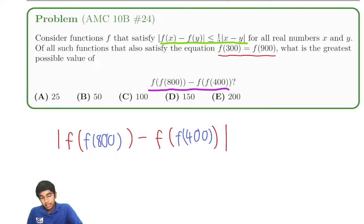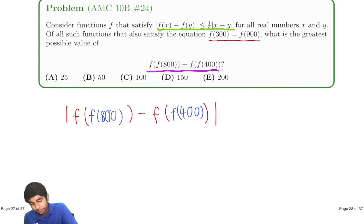So what we can say is that, let this part be x and this part be y. We're given that the absolute value of this quantity is less than or equal to 1/2 x minus y. And that's 1/2 f(800) minus f(400).